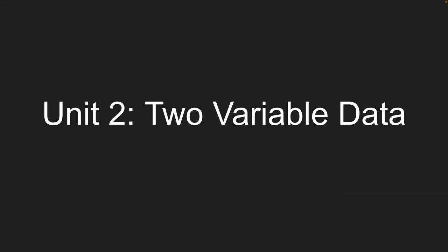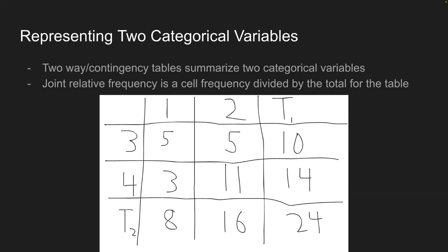Unit 2: Two variable data. How do you represent two categorical variables? A two-way contingency table summarizes two categorical variables. The joint relative frequency is the cell frequency divided by the total for the table. Here's an example: columns labeled 1 and 2, rows labeled 3 and 4, with a total row and column. The values are: cell (1,3)=5, (2,3)=5, (1,4)=3, (2,4)=11. The joint relative frequency is just a given cell's frequency divided by the table total.